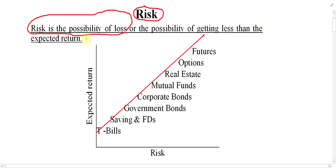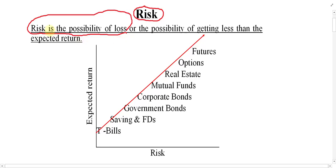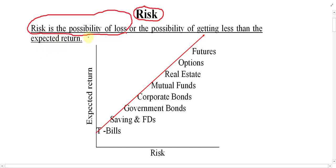Risk is the possibility of loss, or the possibility of getting less than expected return. Risk means the chance of loss in the future. If it is possible to suffer loss in the future because of any reason, that is called risk. If it is not possible to suffer loss in the future, then there is no risk. As much as the chance of loss is more, risk is more; as much as the chance of loss is less, risk is less. Risk and loss are not the same — risk simply means the possibility of loss in the future.